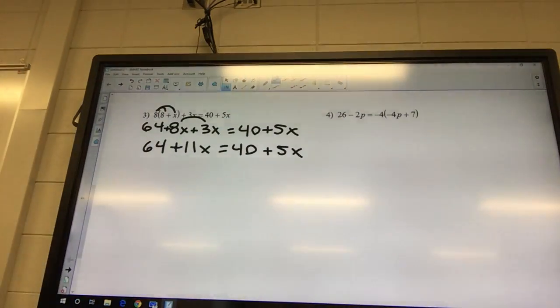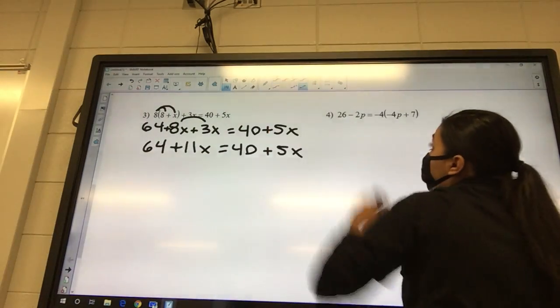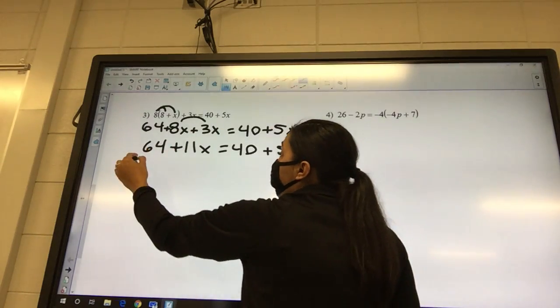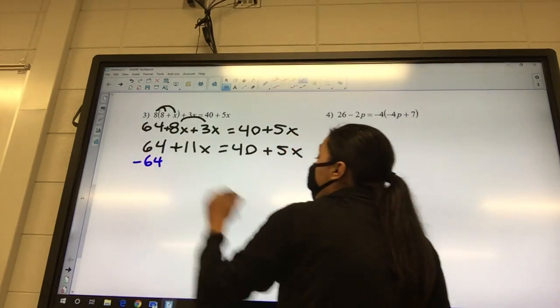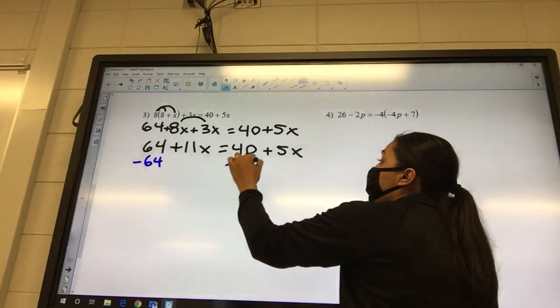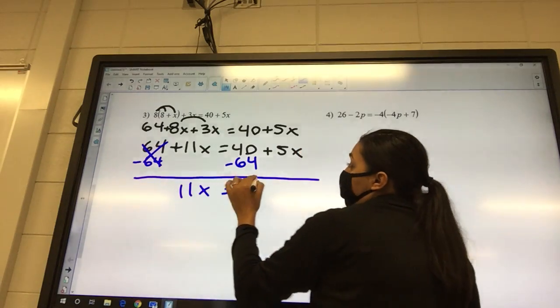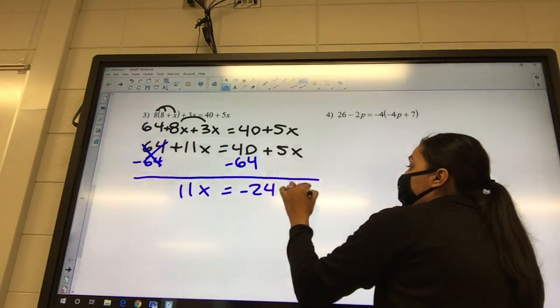Your next step on all of these is going to be letters to left and numbers to the right. So 64, is that a letter or number? Number, so it needs moved. I'm going to say minus 64, and which number does it go under over here? Under the 40. So minus 64, minus 64. Negative 24 plus 5x.